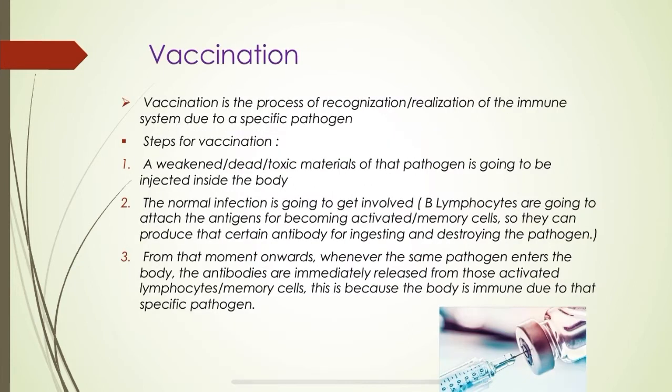So what is vaccination? Vaccination is the process of recognition — the process of realization of the immune system due to a specific pathogen. For example, if we are going to a country where there is a bacteria, prion, virus, or parasite which only spreads in that specific country, I would vaccinate myself.